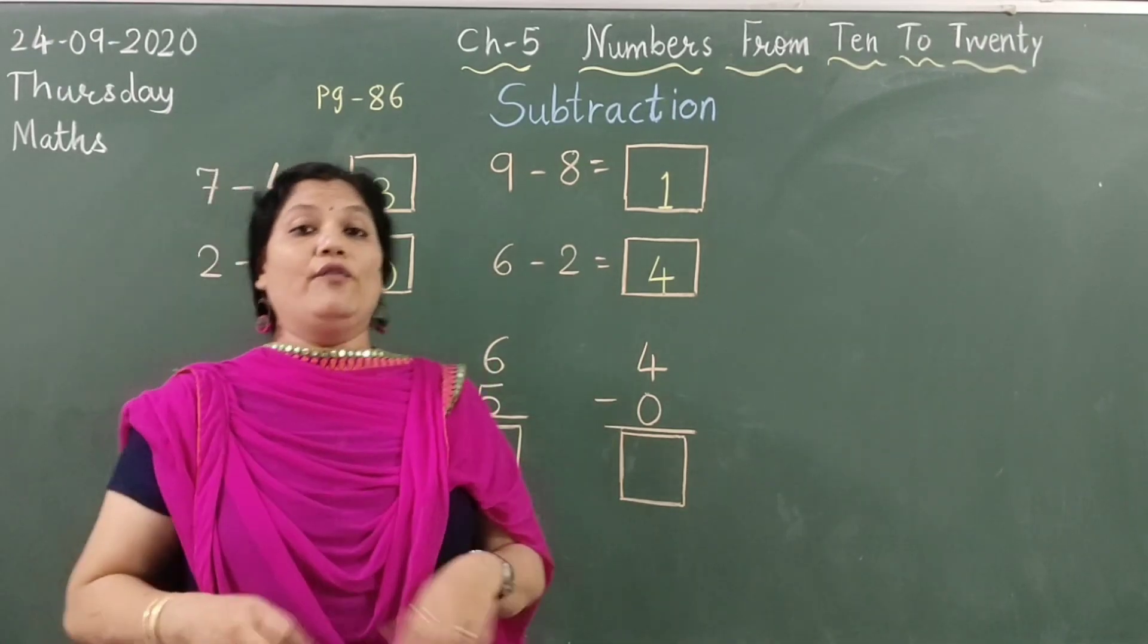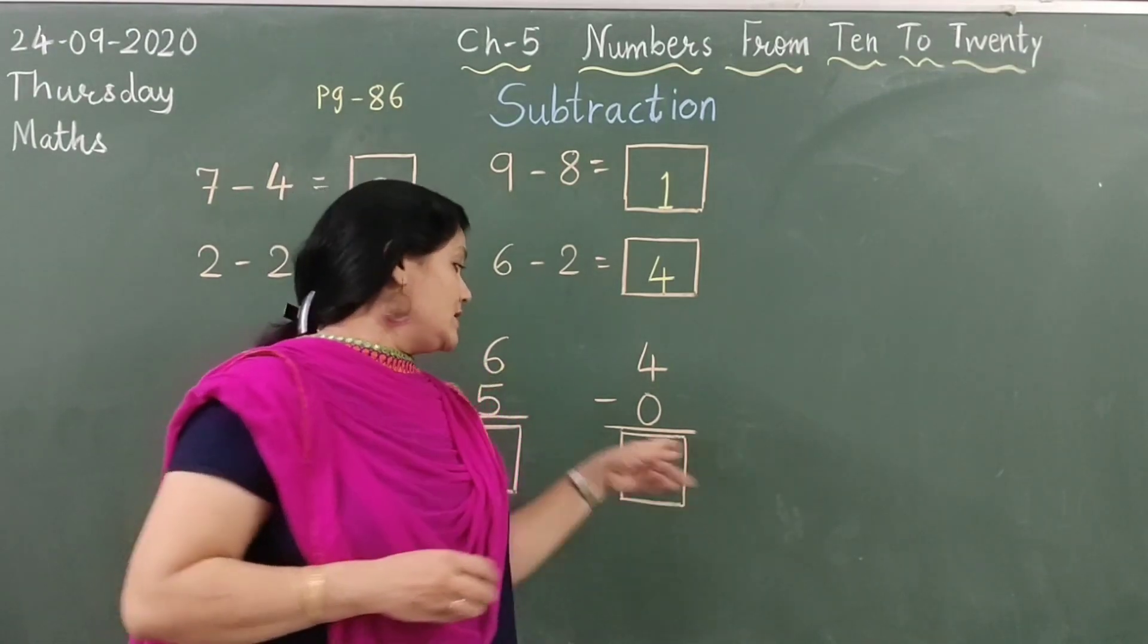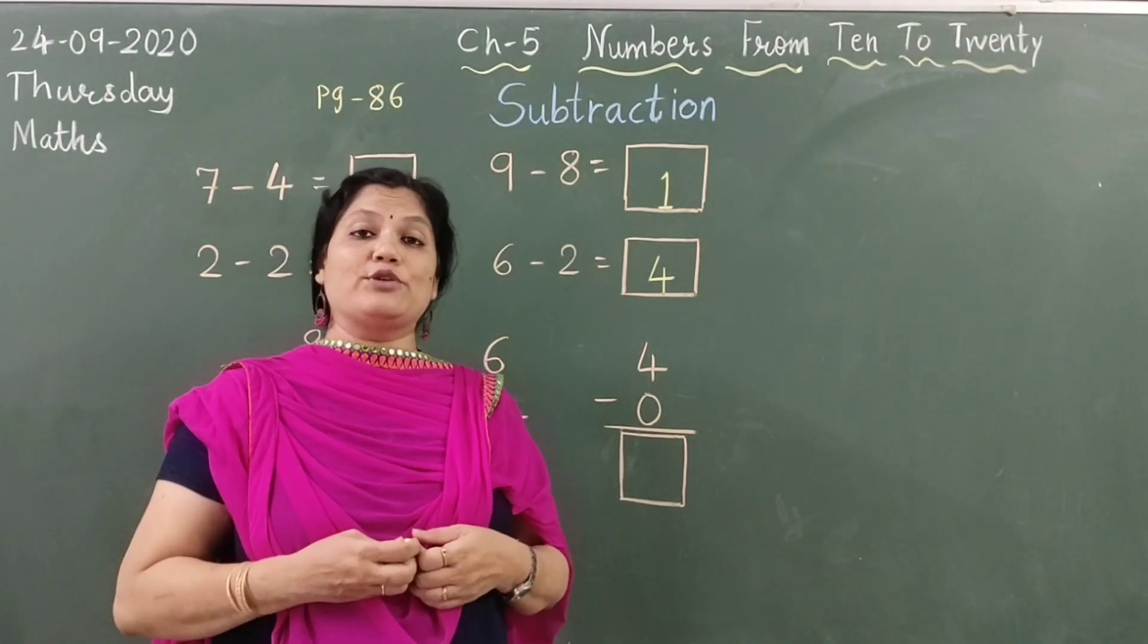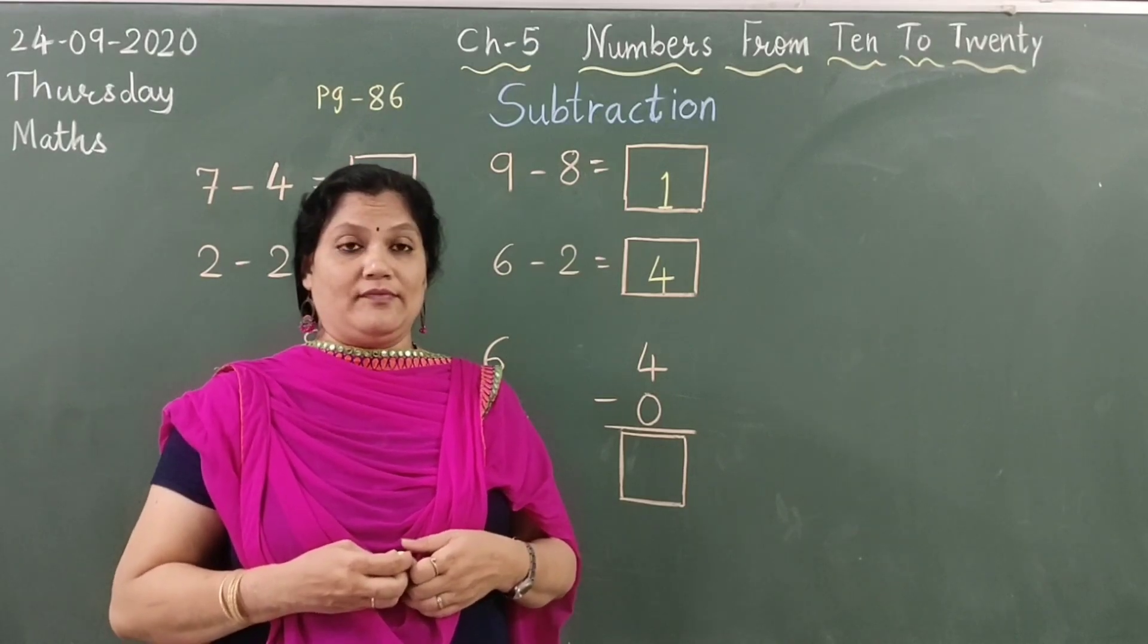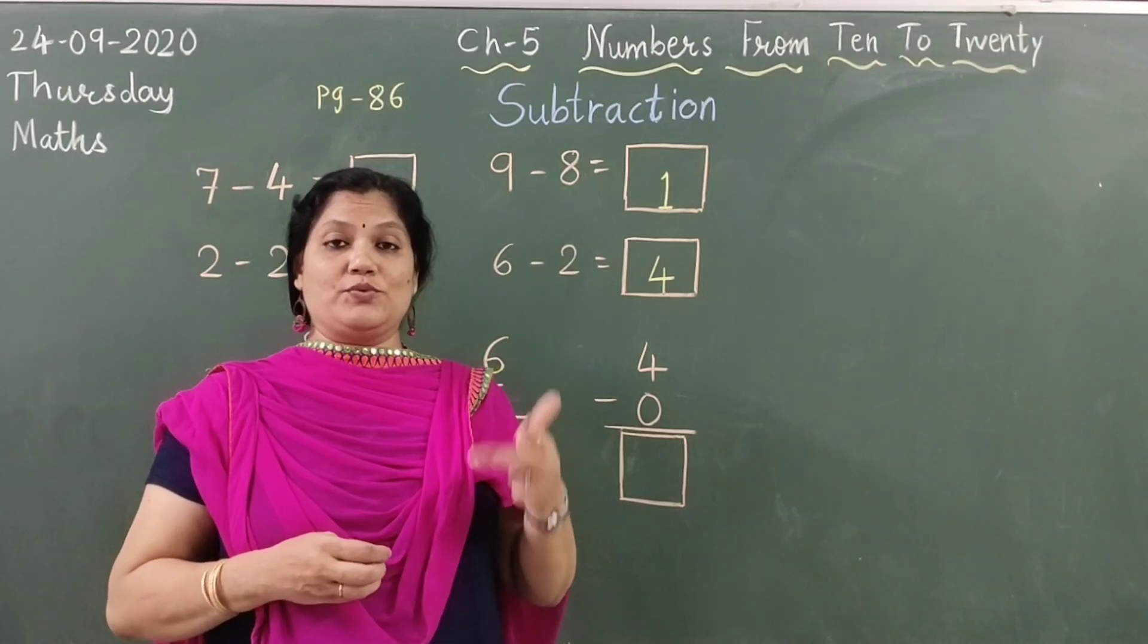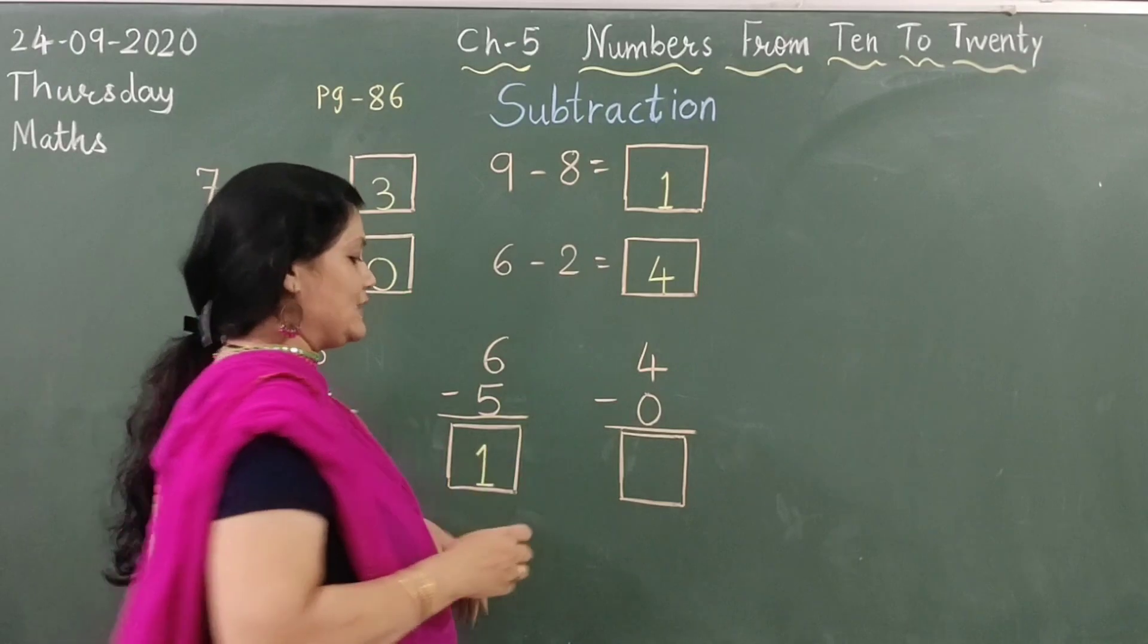Here, 4 minus 0. After 0 we have to count till 4. 1, 2, 3 and 4. 4 minus 0 is 4.